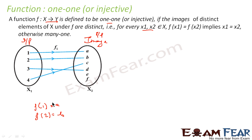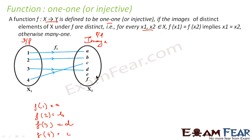Similarly, f(3) = d because if you give 3 as input you get d as output, and f(4) = c. A function is said to be one-one if for every input there is a distinct image — you can't have two different inputs sharing the same image; one input will have one distinct image.